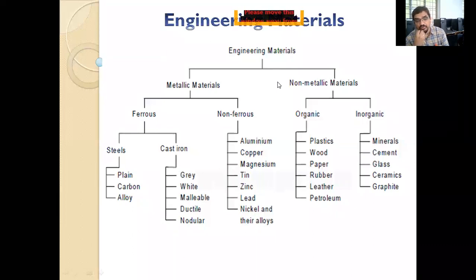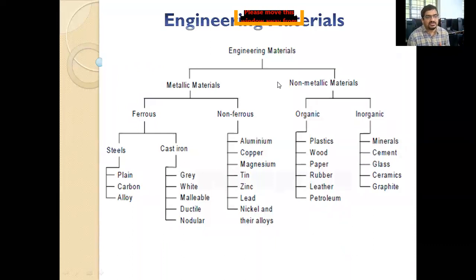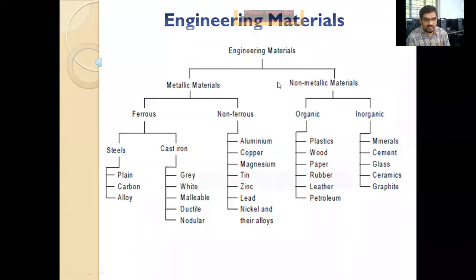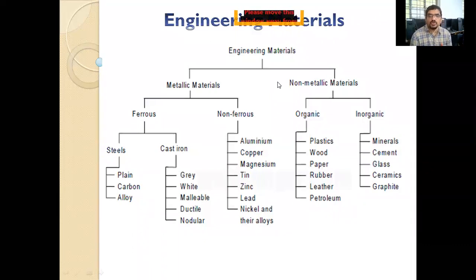Whenever we are doing any kind of design, we must know what materials are available or what models we can use — what materials are easily available in the market. Sometimes you can suggest a material is best, like chromium for a gear, but you have to worry about cost too. You cannot use too expensive a material because it will increase cost and won't be feasible.